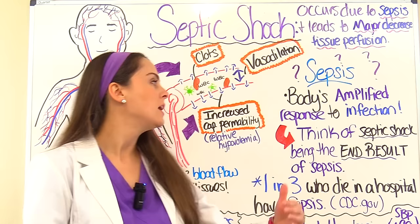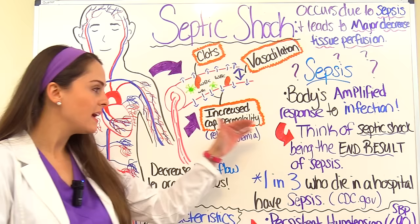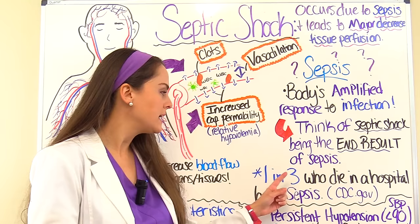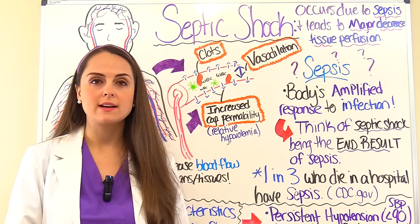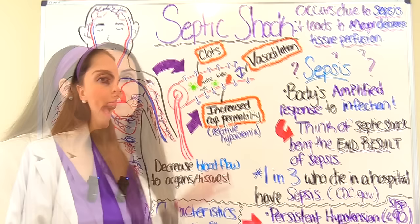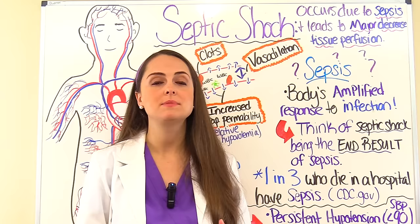Think of sepsis as a progression — sepsis progresses and leads to septic shock, so septic shock is really the end result of sepsis. According to CDC.gov, one in three who die in a hospital have sepsis. As a nurse we need to recognize the early signs and symptoms of sepsis so patients don't reach this point, and we need to be aware of which patients are at risk for developing sepsis.